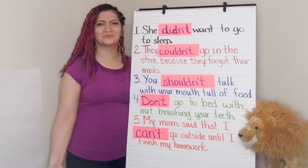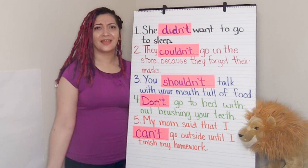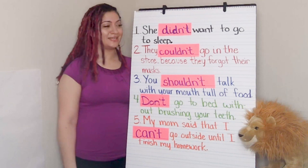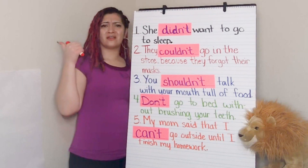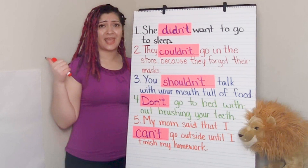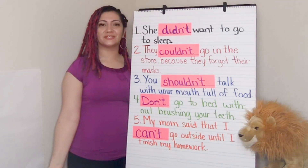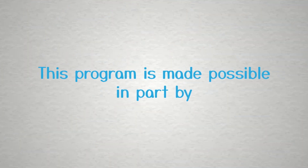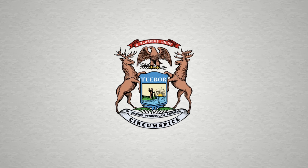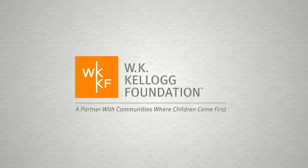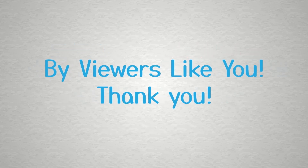Well, you know what? We've practiced reading, writing, and roaring contraction words today. I want you to continue practicing adding the word not to other words. See if you can war that O — or maybe sometimes that N — out of there and put that apostrophe in its place. What contraction words can you come up with? This program is made possible in part by the Michigan Department of Education, the State of Michigan, and the W.K. Kellogg Foundation. Additional support by viewers like you. Thank you.